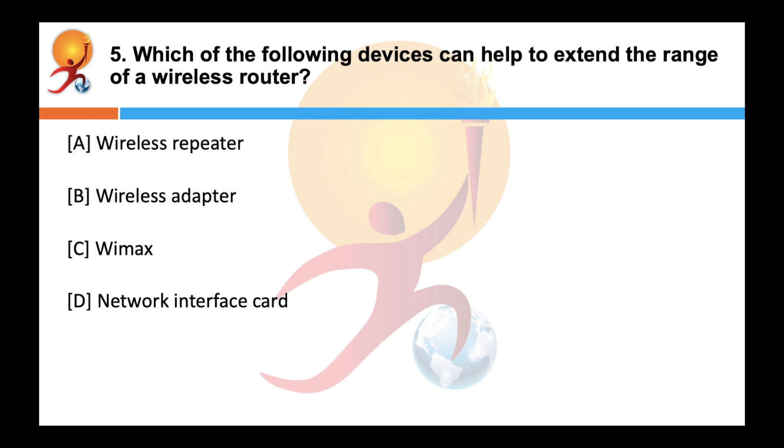Which of the following devices can help to extend the range of a wireless router? Correct answer is A. Wireless repeater is used to extend the range of wireless router. A repeater receives wireless signals and amplifies the strength of the signals and then re-emits them.